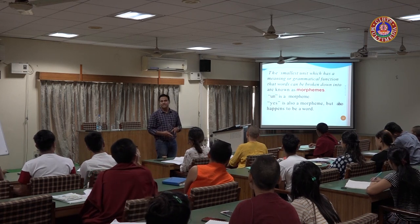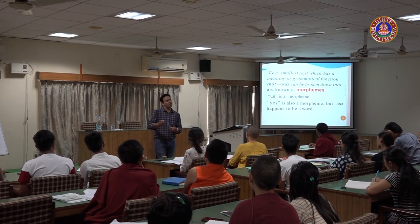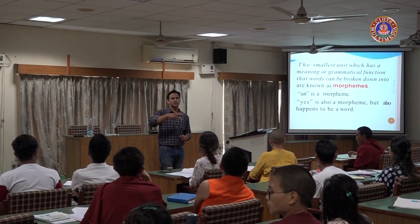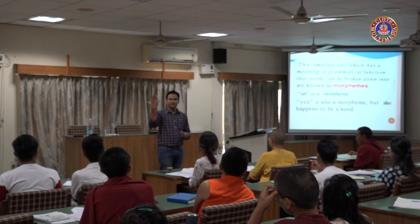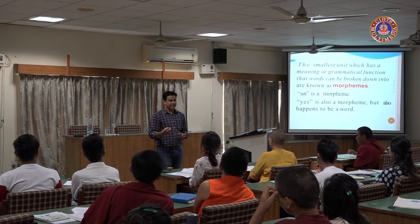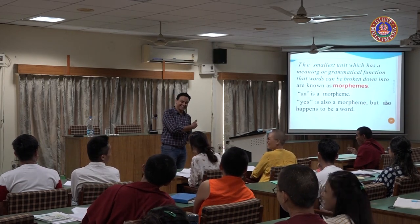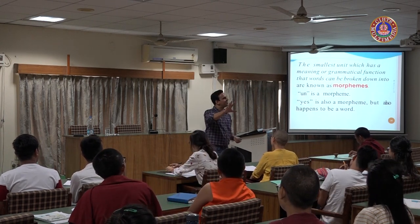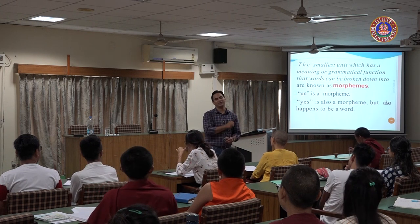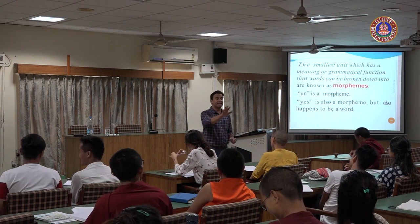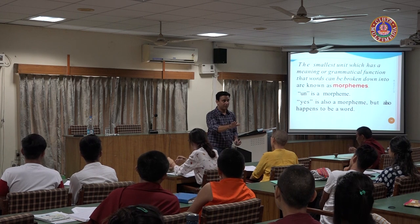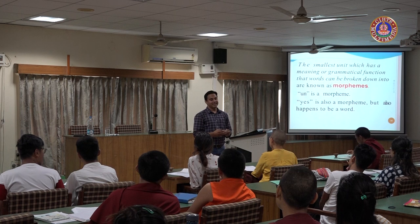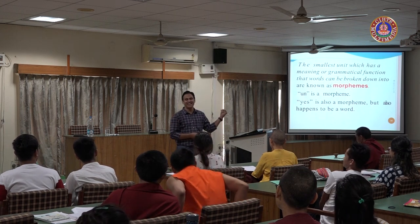Let me give a Hindi example to illustrate. 'Bharat' is a simple word. 'Bharatiya' is complex — 'iya' is a morpheme attached to Bharat. 'Bharat-vasi' — someone who resides in India — is a compound word: both 'Bharat' and 'vasi' can exist independently. The concept is in your mind now. Shall we go on? Any questions or doubts?